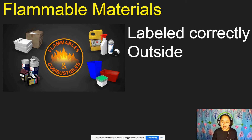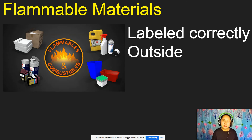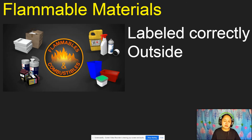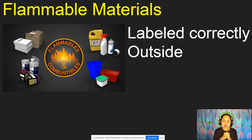So how do we handle or keep flammable materials? First, they should be labelled correctly — meaning they must have a label indicating that it is flammable, or that it can easily catch fire. Flammable materials should be labelled correctly and, if possible, they should be stored outside our house.